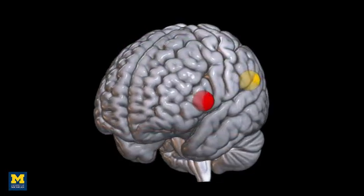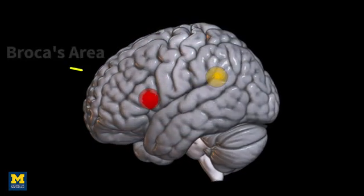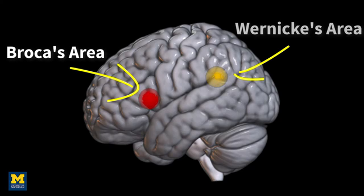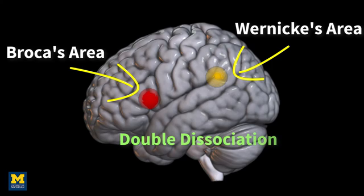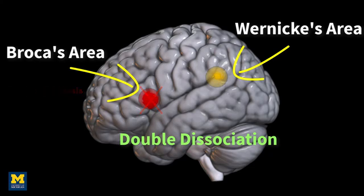Going one step further, lesion studies of Broca's area and Wernicke's area have revealed a double dissociation. Damage to Broca's area results in non-fluent aphasia — that is, the inability or extreme difficulty to speak or write. Damage to Wernicke's area, on the other hand, leads to fluent aphasia, in which the patient is able to speak and write but in a disordered, random manner.